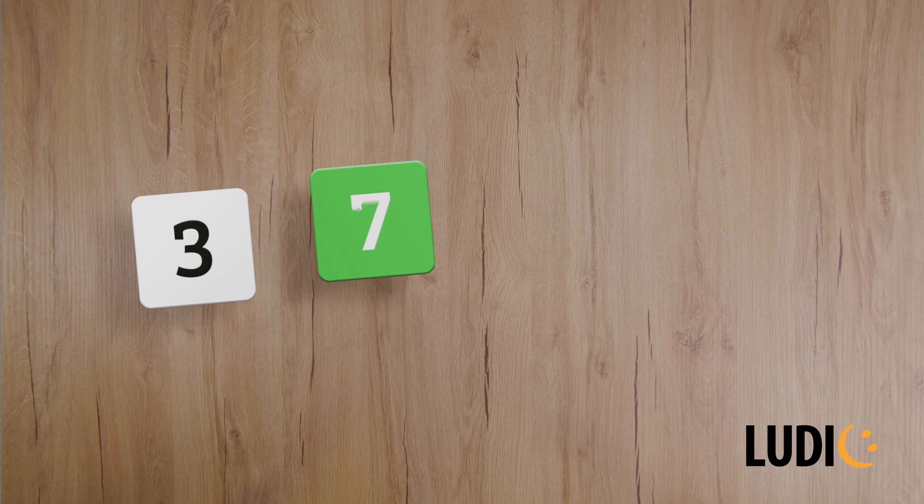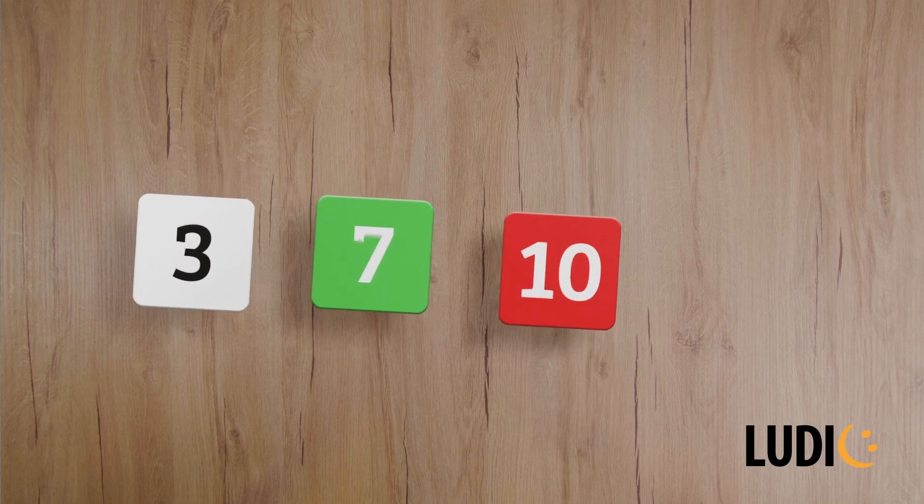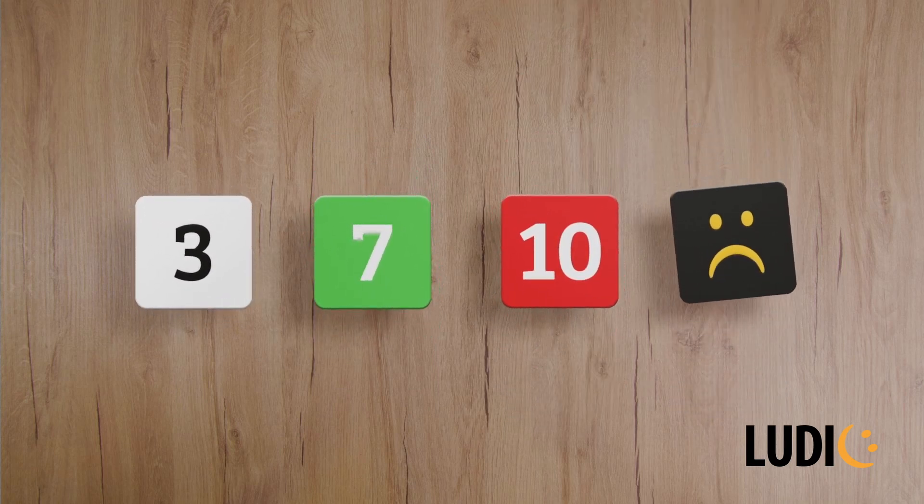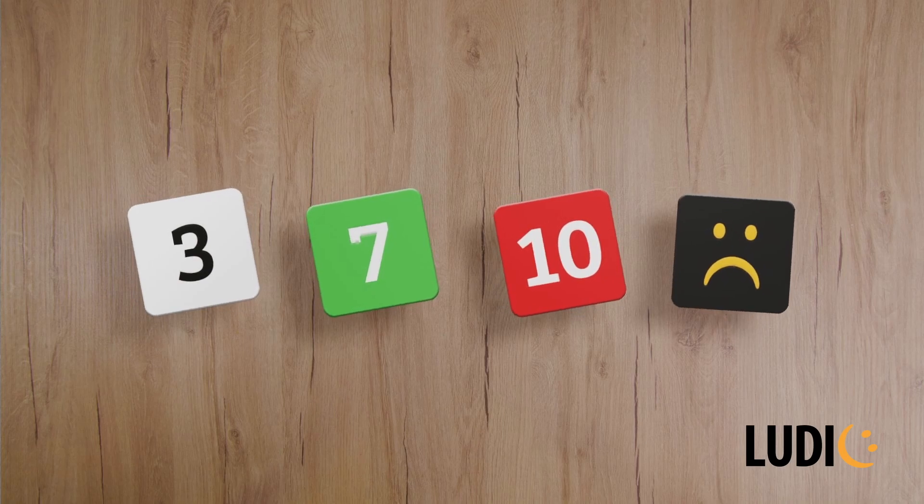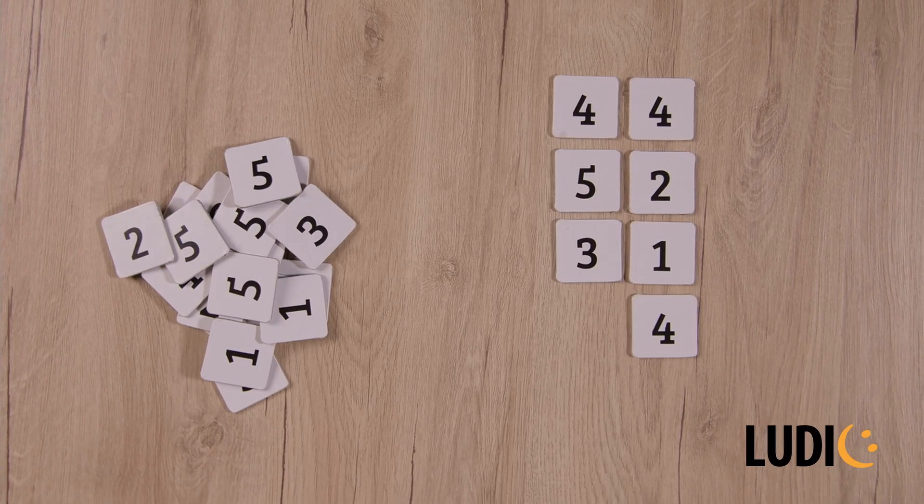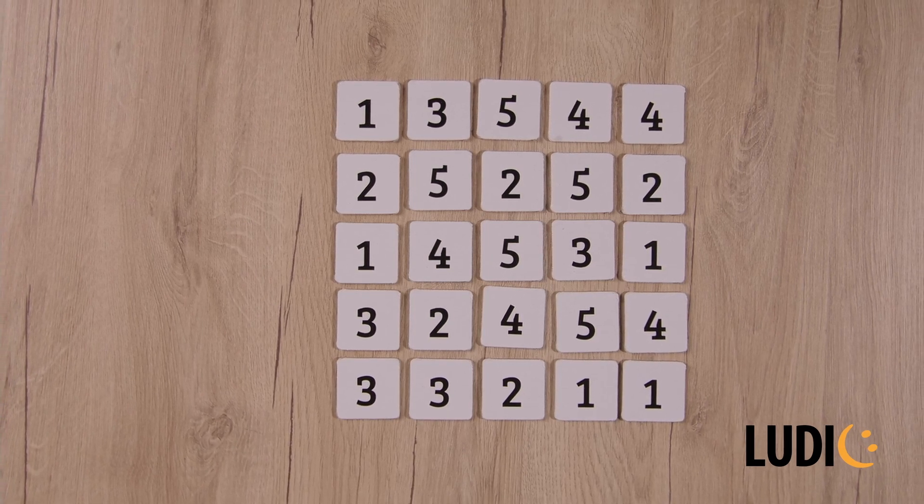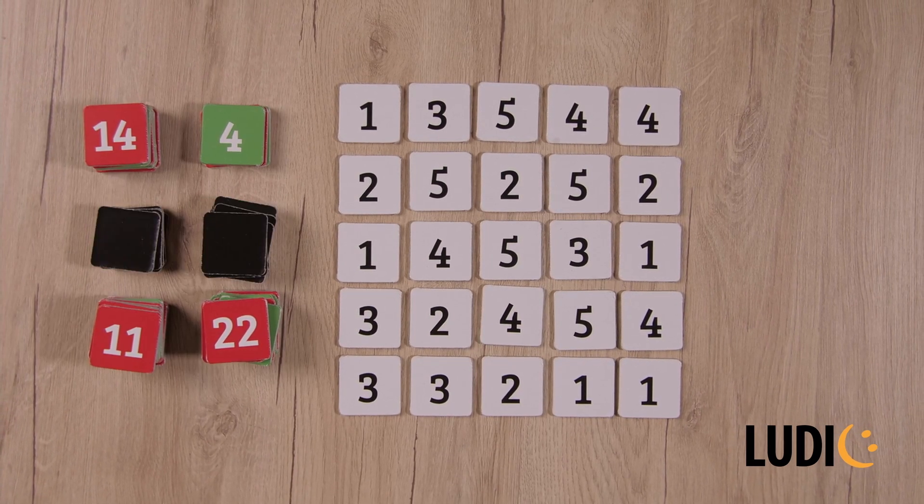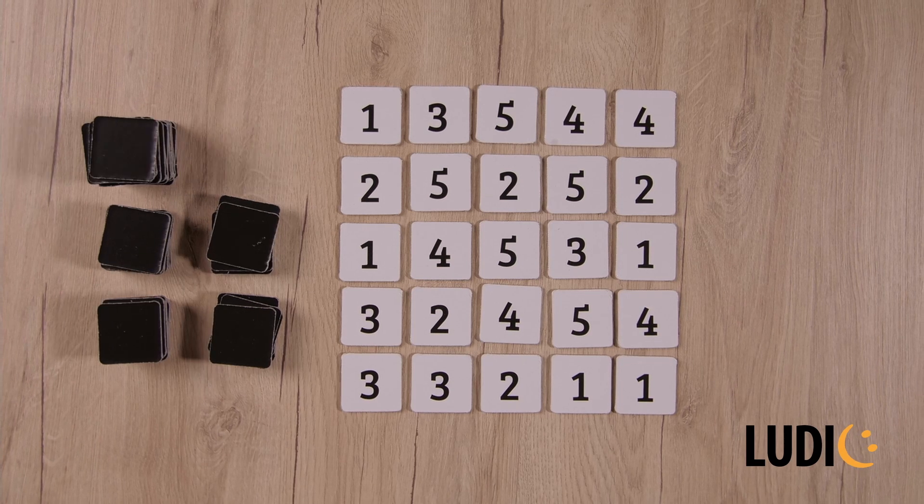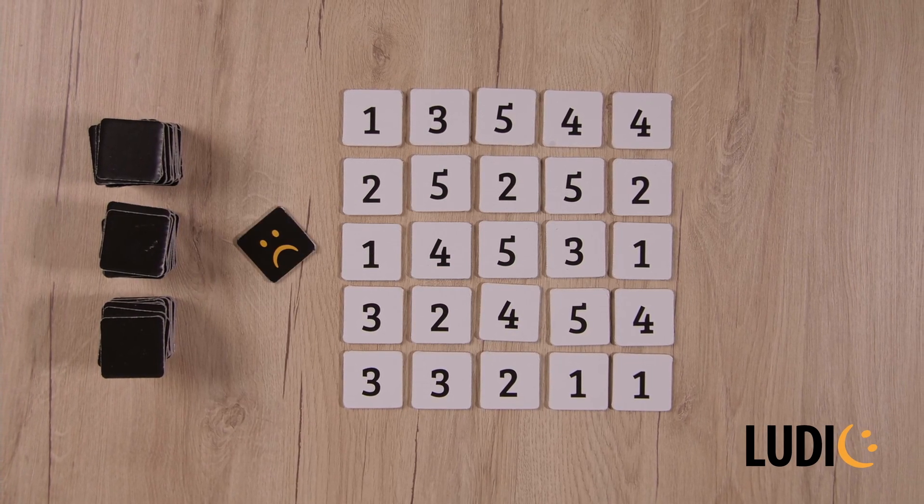The box contains 25 number tiles, 23 green goal tiles, 23 red goal tiles, and an error tile. The white number tiles are placed on the table in 5 rows of 5 cards. The goal tiles are shuffled and placed in several decks next to the board, together with the error tile.